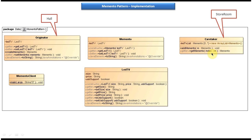On the right side you can see the caretaker, which is nothing but the store room. The caretaker maintains the Memento objects — here it maintains LED TVs as an ArrayList. It has a method to add the Memento object to this ArrayList, and it has a getMomento method where you pass the index. Based on the index value it returns the particular Memento object. Suppose you want to restore or rollback, you can get the old Memento object from the caretaker by calling getMomento.